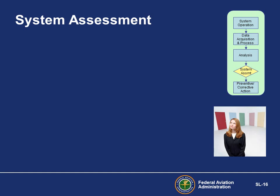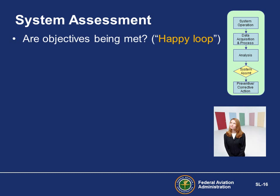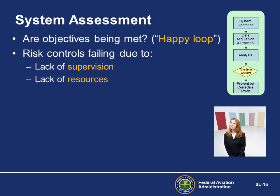System assessment is the fourth step in the safety assurance process. It applies value judgments to the situation as understood in terms of available information and the decision maker's past experience. There are three possible options for decision makers. First, the objectives are being met — no action is taken and the system will be monitored and assessed again in the future. Second, deviations to existing controls are discovered, possibly due to lack of supervision, lack of resources, lack of training, or poor job aids.